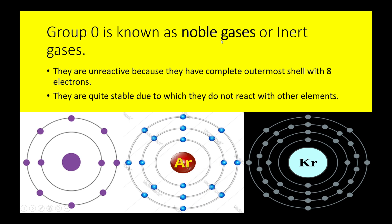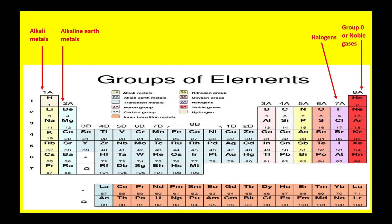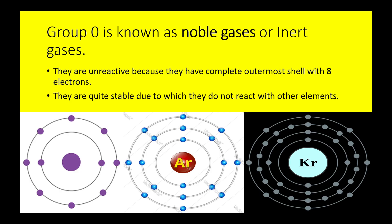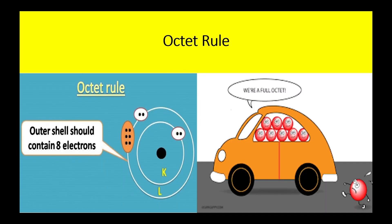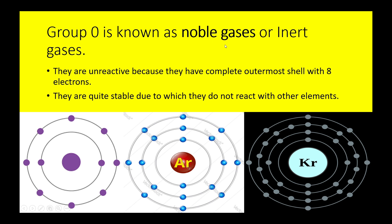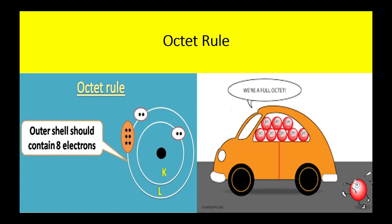Group 8A is known as noble gases or inert gases, and is also called group 0. Because elements in group 8A have 8 electrons in their outermost shell, and according to the octet rule the outermost shell should contain 8 electrons for stability. So these elements are very stable and don't react with other elements — they already have a complete outermost shell. Elements from group 1 to group 7 don't have a complete outermost shell, so they are always ready to react with other elements to gain 8 electrons and become stable.